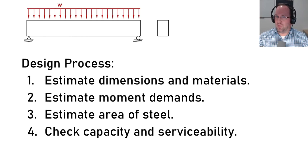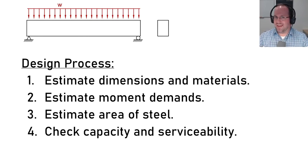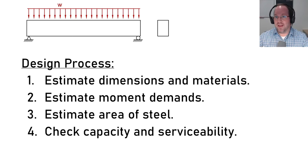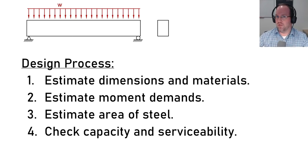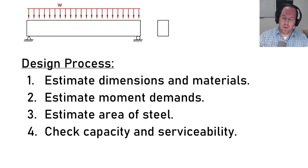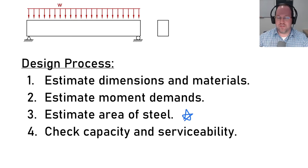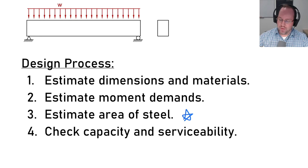The depth and width of the beam you have a decent amount of control over — we're going to talk about that in a separate video, for now let's assume those are given. We'll also need to look at our moment demands, and if you have dimensions and loads that's not too tricky of a process. What we're going to focus on in this video is estimating our area of steel for our cross section given those demands, and then checking our capacity for that section.